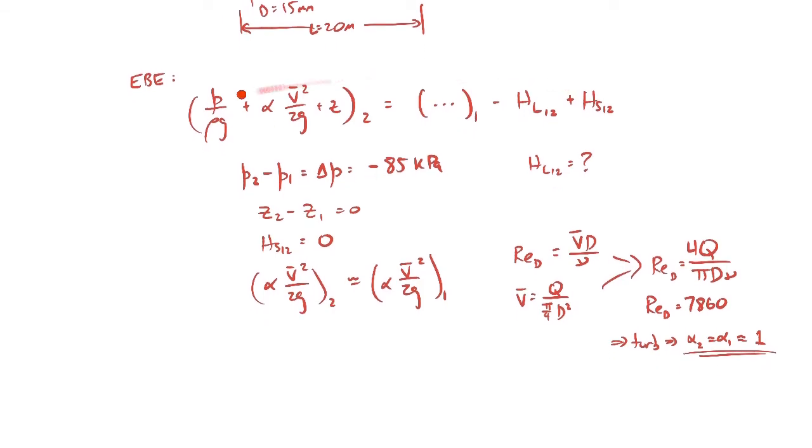Since the average velocities are the same at points one and two, and the kinetic energy correction factors are about the same, these will be the same. Now let's rearrange our extended Bernoulli equation and solve for the head loss between one and two.